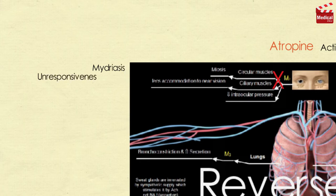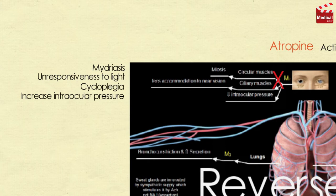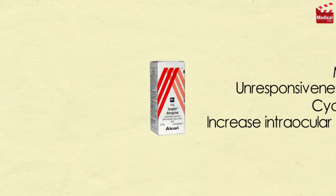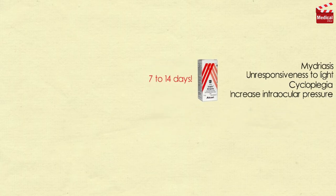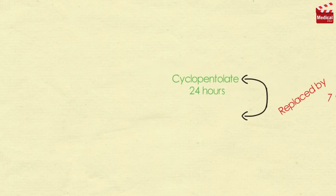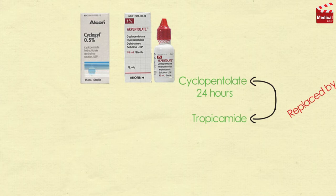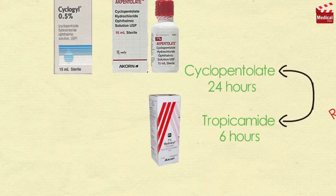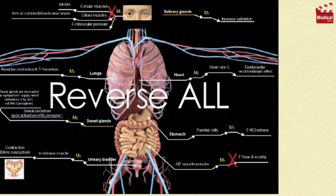Atropine blocks muscarinic activity in the eye, resulting in mydriasis, unresponsiveness to light, and cycloplegia — the inability to focus for near vision — and intraocular pressure may rise, especially in patients with closed-angle glaucoma. It can be used as an ophthalmic solution, available under the brand name Isopto Atropine, but it has a very long duration of action of about 7 to 14 days. It has been replaced by shorter-acting ophthalmic solutions such as cyclopentolate (about 24 hours duration) and tropicamide (about 6 hours duration).